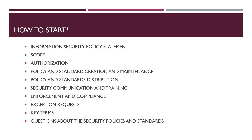So we have covered the first five points: first, define the policy statement including which standards you are following; second, define the scope — who all should be covered; third, identify the authorization party; fourth, identify who is responsible for creating, maintaining, reviewing, and updating the policy; and fifth, who is responsible for distributing and ensuring people understand the policy. This is today's video and the remaining five points will be discussed in the next video. Please like, share, and subscribe. Thank you.